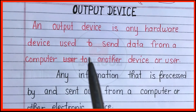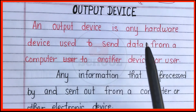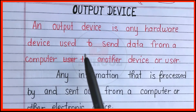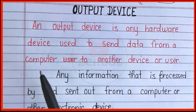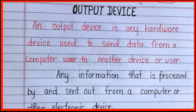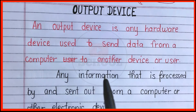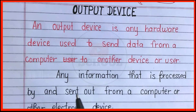An output device is any hardware device used to send data from a computer to another device or user. Any information that is processed by and sent out from a computer or other electronic device. For example: